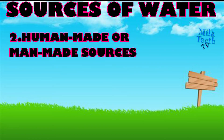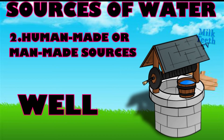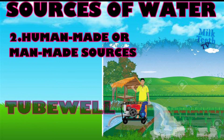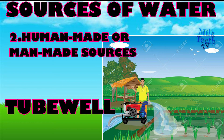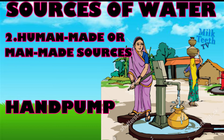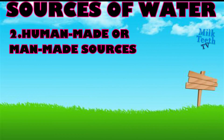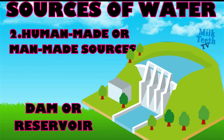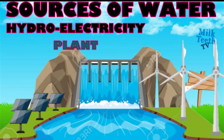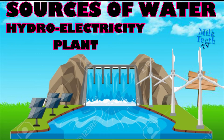The human-made or man-made sources of water are: a well, which can be used to draw underground water with the help of a bucket; a tube well, which uses a motorized system to draw underground water for irrigation of farms; a hand pump, which can be used to draw underground water with the help of a handle manually; and a dam or reservoir, which is used to store water from rivers or streams for irrigation or to generate electricity in a hydroelectric plant.